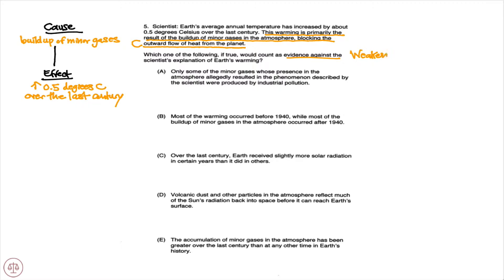Let's take a look at A. Only some of the minor gases whose presence in the atmosphere allegedly resulted in the phenomenon described by the scientist were produced by industrial pollution. That is completely irrelevant — this argument is not about where these minor gases are coming from. So A would be eliminated.